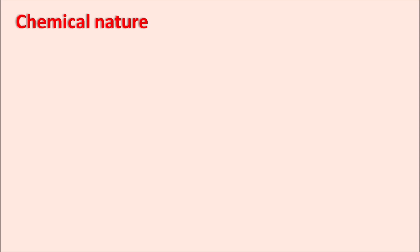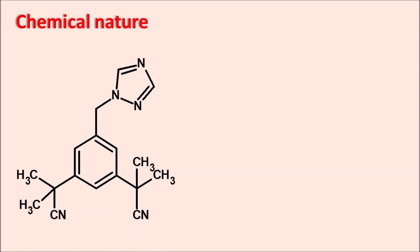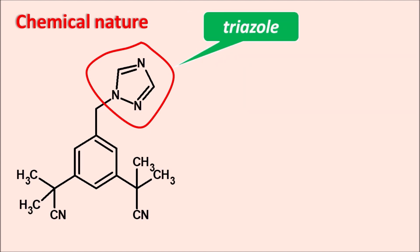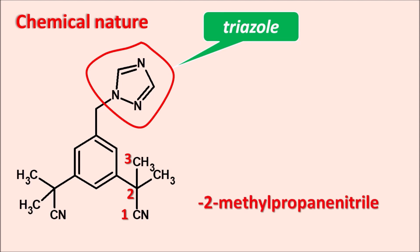Now let us look at the chemical nature of anastrozole. This is the structure of anastrozole, and here we can observe one heterocyclic ring system. This ring has three nitrogens in a five-membered ring system — it is the triazole ring system, which is reflected in the name. For the IUPAC name, the principal functional group is the cyano group. Numbering one, two, three: it is a propanenitrile with a second-position methyl group and a second-position phenyl group — written as 2-methylpropanenitrile with a second-position phenyl ring system.